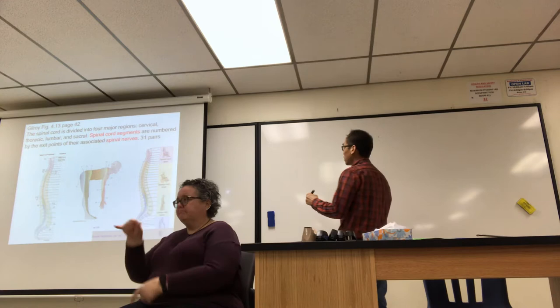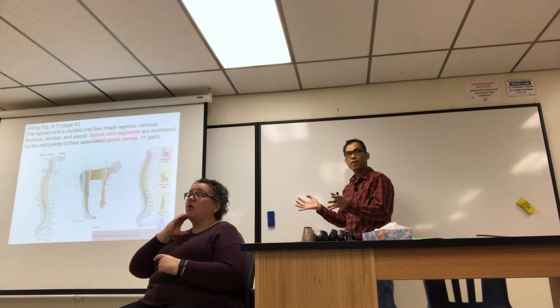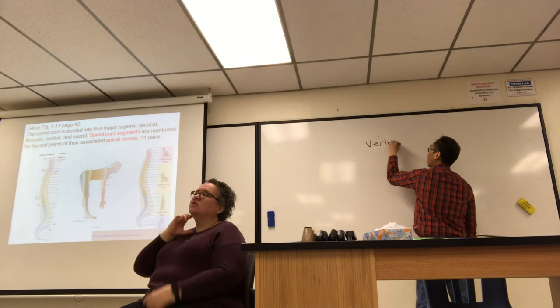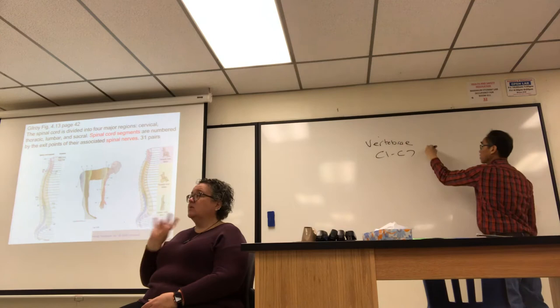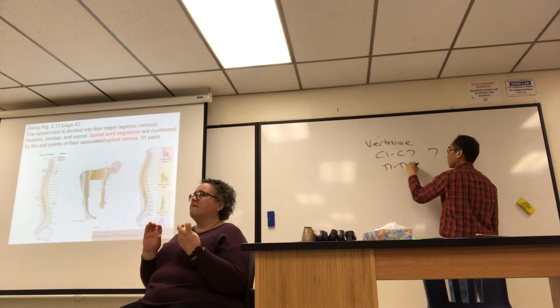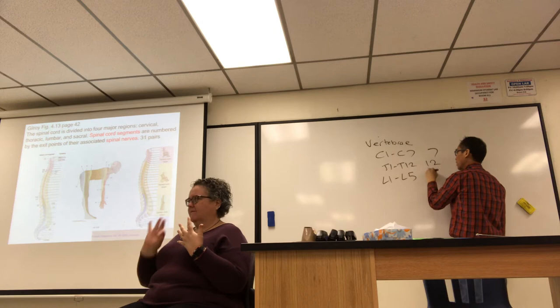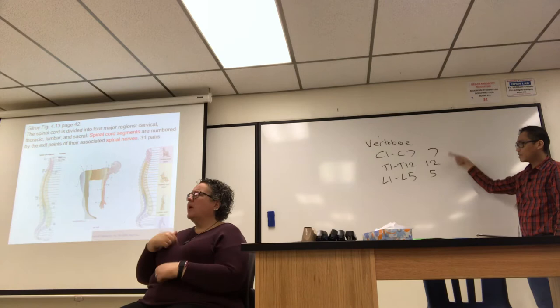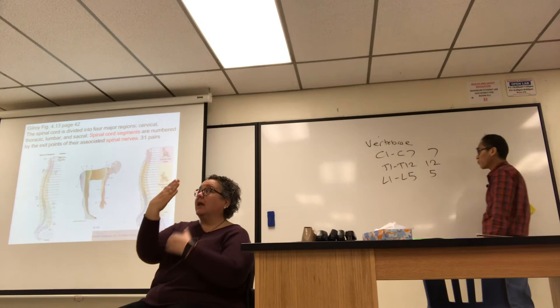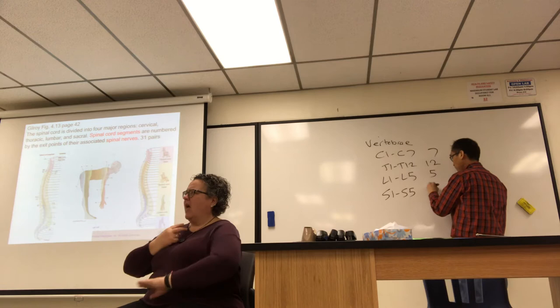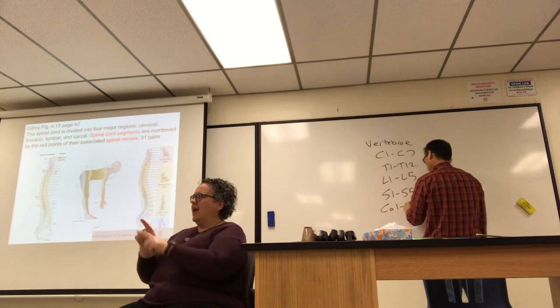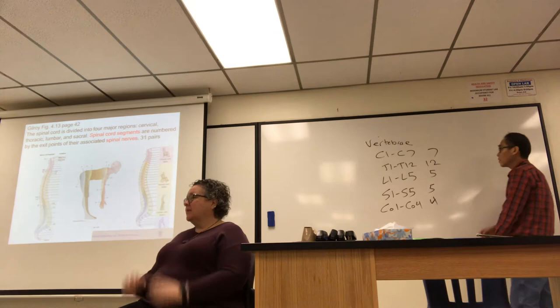Review of vertebral numbers: 7 cervical vertebrae, 12 thoracic, 5 lumbar — remembered as breakfast at 7, lunch at noon, dinner at 5. Then sacral S1 to S5, and coccygeal with usually four segments.